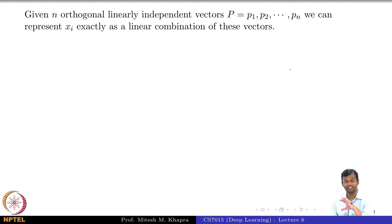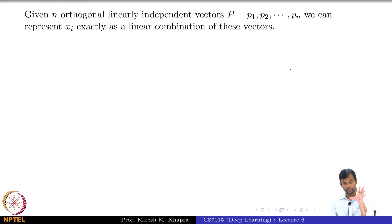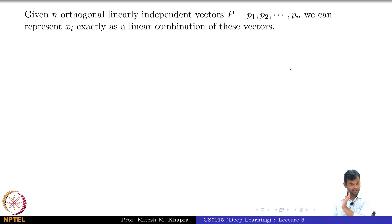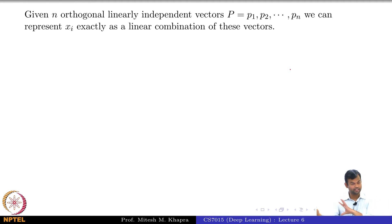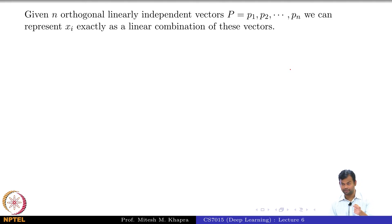If you actually describe the whole thing in words, you are going to write X_i as alpha_1i into P_1 plus alpha_2i into P_2 and so on. And when you do the summation on the right-hand side, you just get back the left-hand side. That means it can exactly be represented when you use all the n eigenvectors.